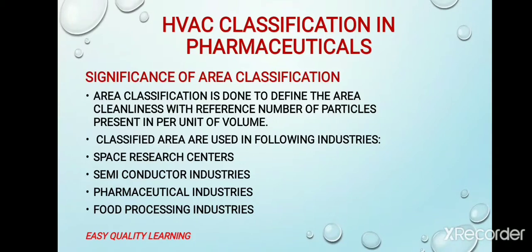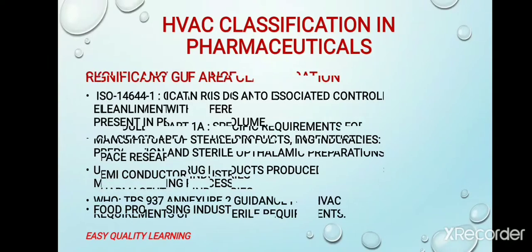First comes the significance of area classification. Area classification is done to define the area cleanliness by reference number of particles. To define area cleanliness, we need some parameters or standards. Regulatory bodies have made different standards with reference to which area cleanliness has been decided and standardized. Classified areas are used in space research centers, semiconductor industries, pharmaceutical industries, food industries, and several other industries.